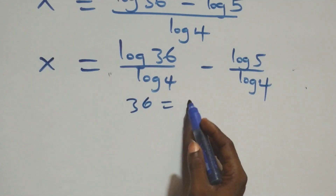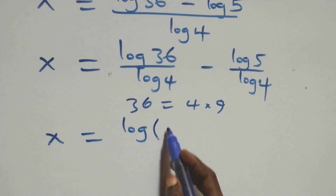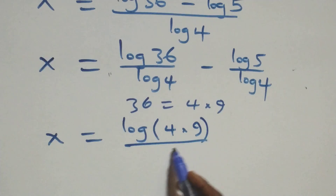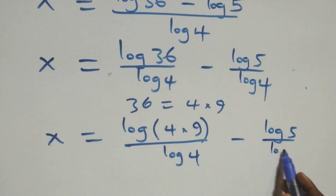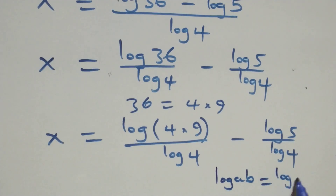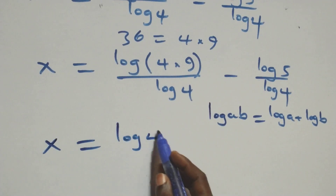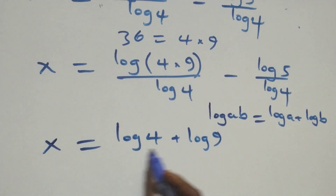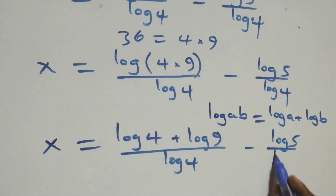We write log 36 as log(4 times 9). So here we have x equals log(4 times 9) over log 4, minus log 5 over log 4. This follows the product law of logarithms: log(a times b) is the same thing as log a plus log b. So x equals log 4 plus log 9 over log 4, minus log 5 over log 4.